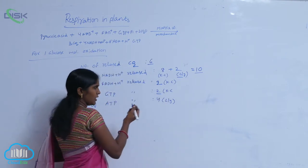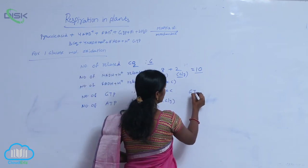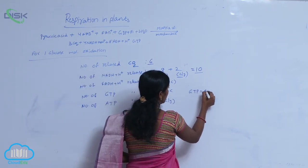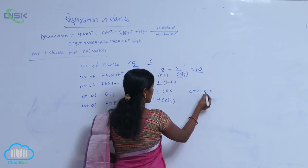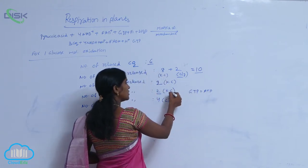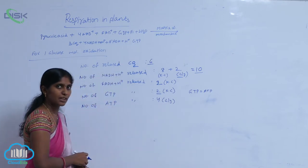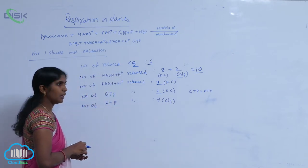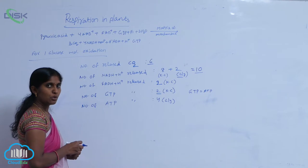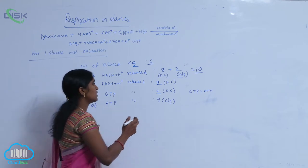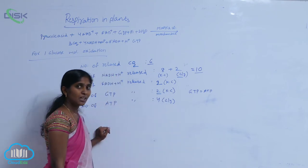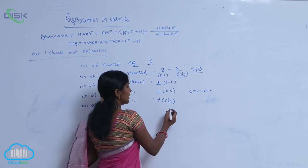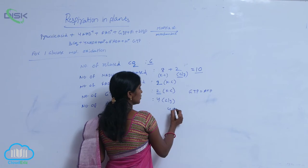GTP is equivalent to ATP, so we consider the GTP as equivalent to ATP. That's why the released ATP's are also present in Krebs cycle. Number of ATP's produced during the oxidation phase: 4 ATP's are released during glycolysis, then you write 4 plus 2 because 2 are GTP's.